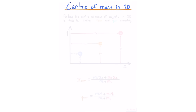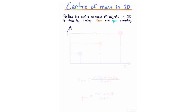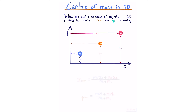Centre of mass in 2D. Finding the centre of mass in 2D is done by finding the x-coordinate and y-coordinate of the centre of mass separately. Establishing an x-y coordinate system, we find the centre of mass coordinates for mass 1 and mass 2 by analysing the x and y situations independently.